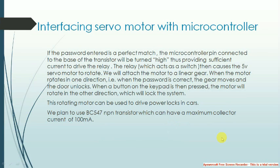Next, we have to interface the servo motor with the microcontroller. If the password entered is a perfect match, the microcontroller pin connected to the base of the transistor will turn high, providing sufficient current to the relay, which will cause the 5V servo motor to rotate. The motor is connected to the end of a linear gear. When the motor rotates in one direction — that is, when the password is correct — the gear moves in a particular direction, which will unlock the door. When the reset button on the keypad is pressed, the motor will rotate in the opposite direction, causing the gear to move back and lock the system.